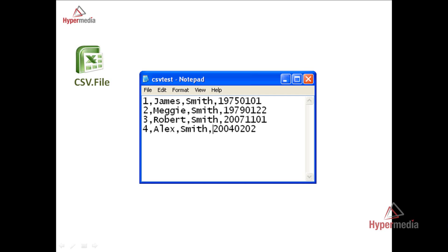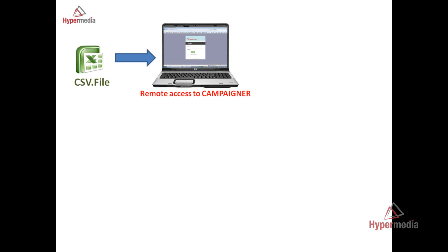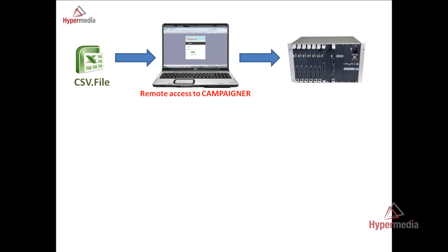In the CSV file, you can write down the names of your customers — name, last name, contact number, and probably email as well. Once you have a database, in order to start a campaign you will access the Campaigner application remotely from your computer. The Campaigner application actually runs in the Gateway, which is really convenient because you can access it from any computer connected to the Internet.